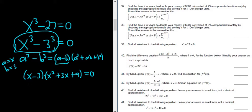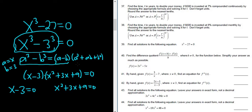Now we have a product equal to 0, so we set each piece equal to 0. We have x minus 3 equals 0, and x squared plus 3x plus 9 equals 0. That's the difference of cubes — really powerful formula. From the first equation, add 3 to both sides and you get x equals 3. That's one of the answers.